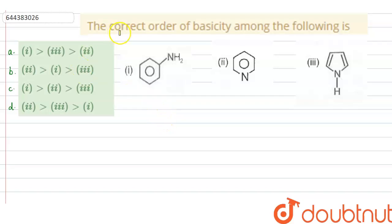Hello everyone, let us solve this question. The question says that the correct order of basicity among the following is. So in this question, as you can see, three compounds are given and we have to find out the correct order for their basicity.